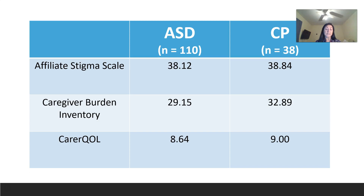Based on these scores from the affiliate stigma scale, the parents did not feel stigmatized from having a child with autism spectrum disorder or cerebral palsy. In terms of the caregiver burden inventory, a total score of more than 36 indicates high risk of caregiver burnout, and a score between 26 and 36 indicates a need for respite care. Neither group of parents were at the point of caregiver burnout; however, all did need some form of respite care since they all scored above 26. Parents of children with cerebral palsy scored higher, closer to the stage of caregiver burnout than parents of children with autism spectrum disorder.